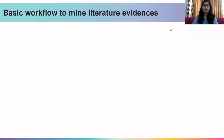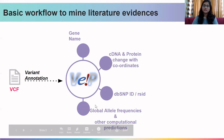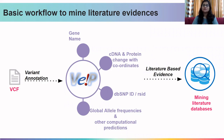Let us start with the basic workflow to mine literature-based evidences. We will first start with the VCF file and annotate the variants using VEP. VEP will generate details about the variant such as the gene name, the cDNA change, the protein change with coordinates, and the DBSNP ID or RSID. Using these details, we will gather literature-based evidences and assign ACMG attributes to understand the clinical consequence of the variant.